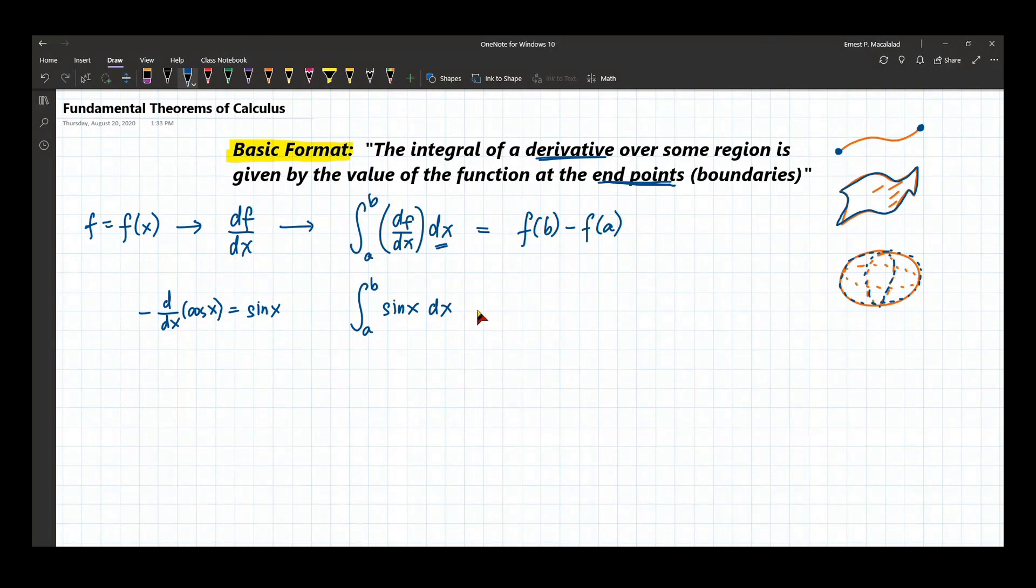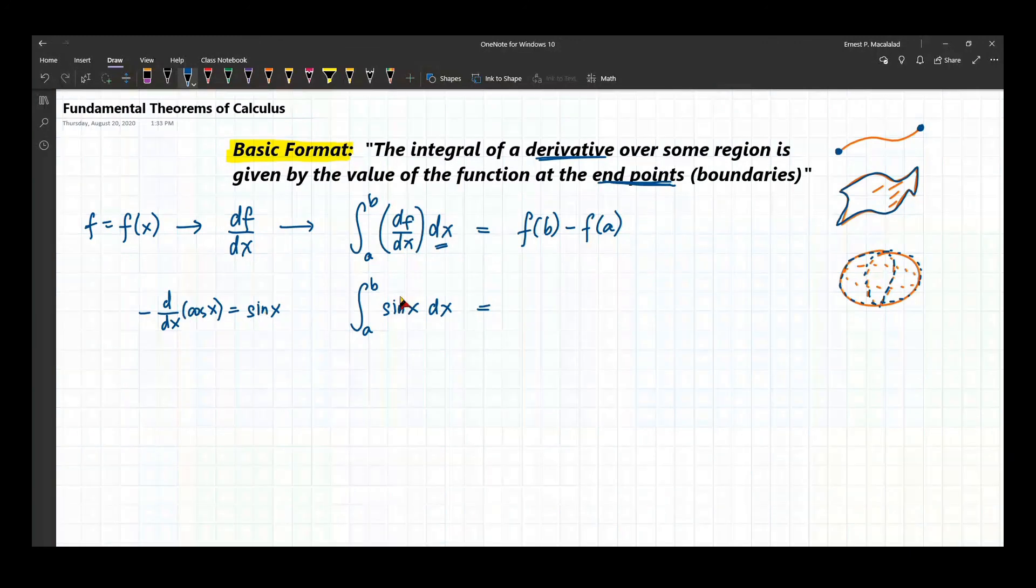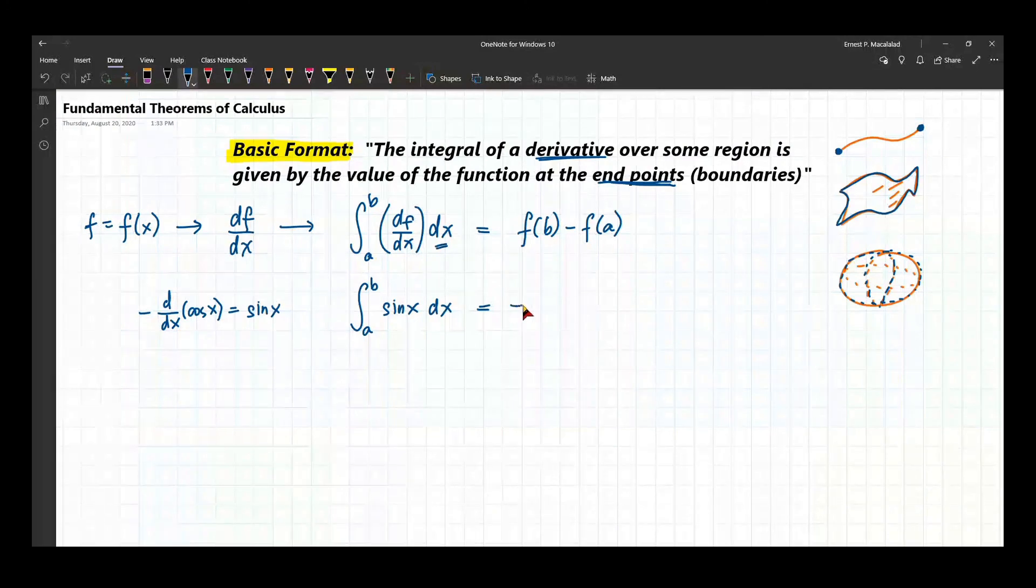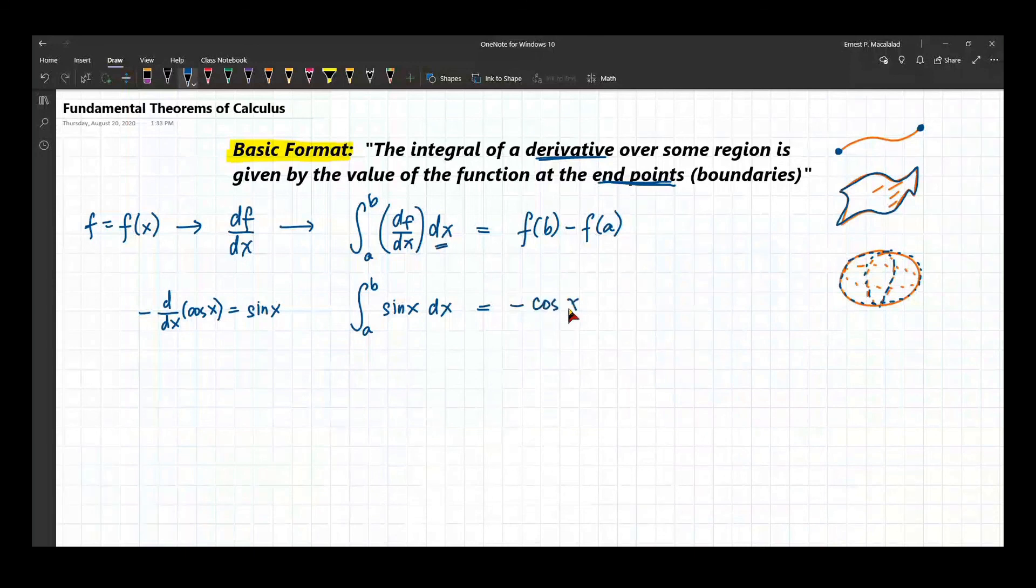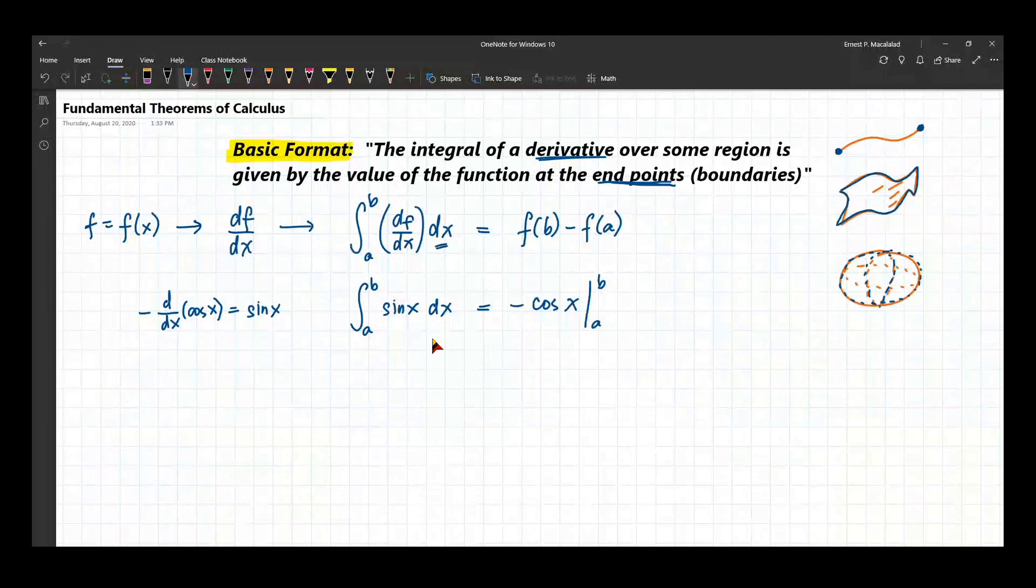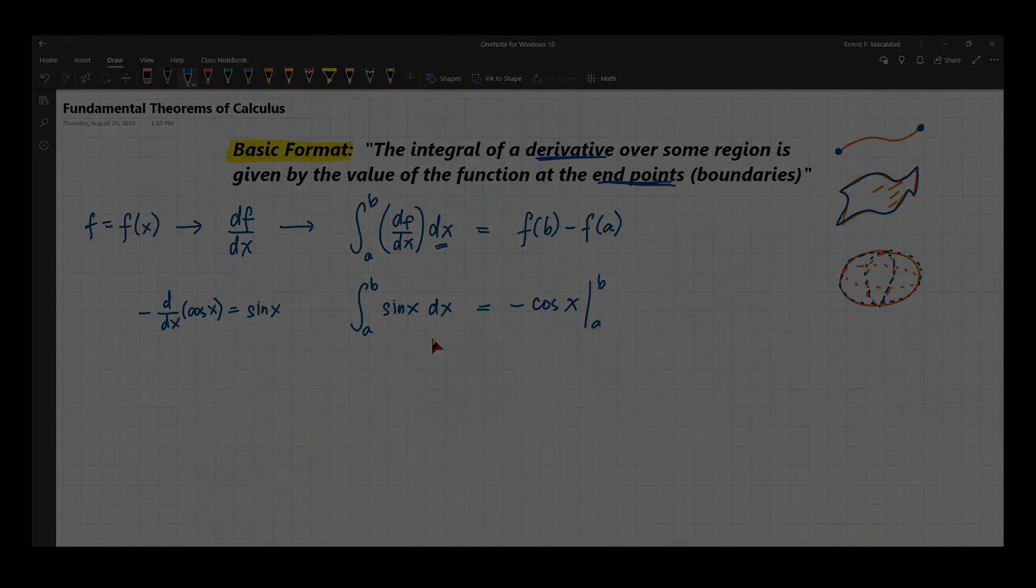So that means this function here is negative cosine x. So when we integrate this, this is actually negative cosine x, and then we evaluate it from a to b. That is precisely the fundamental theorem of calculus. So that's the basic theorem that we use whenever we do integration.